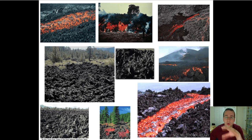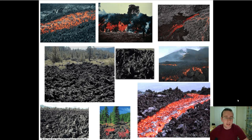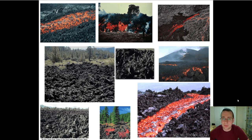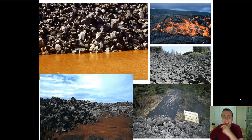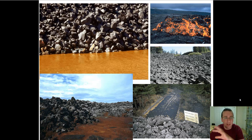Underground magma chambers also have lava flowing incredibly fast since it's not being slowed down by obstacles on the land. If the lava is a little colder and has even more silicon, it's going to be very, very sticky — but it's still a lava flow. We call that blocky lava.